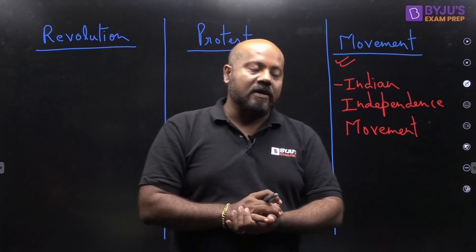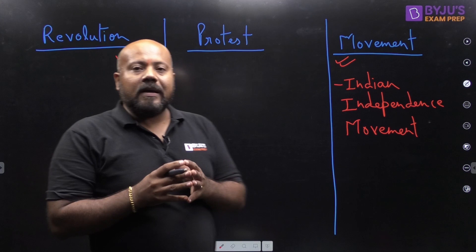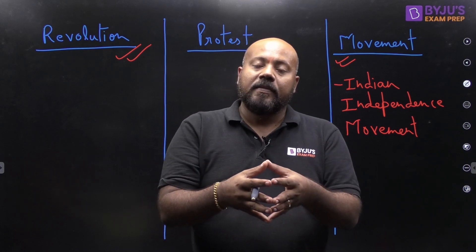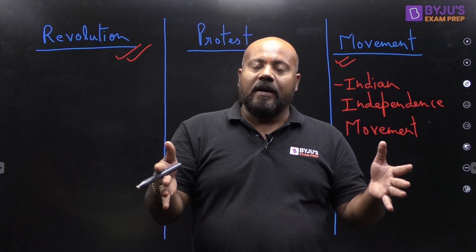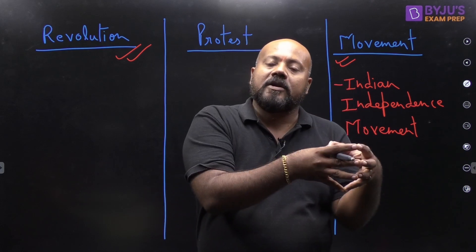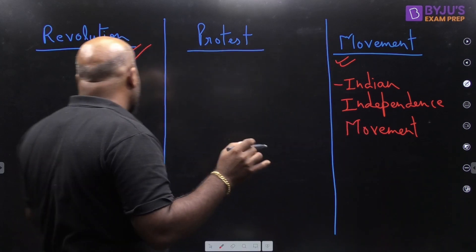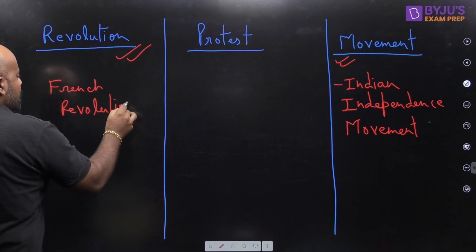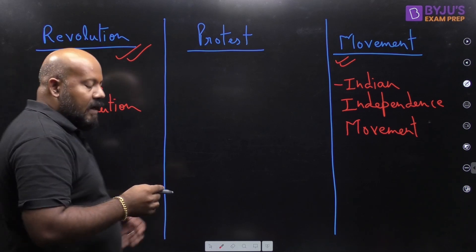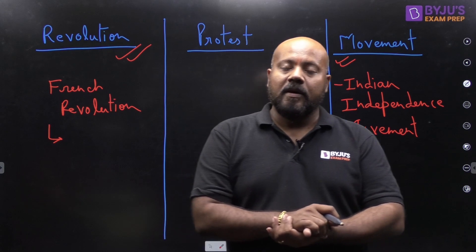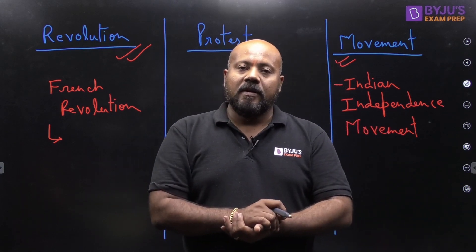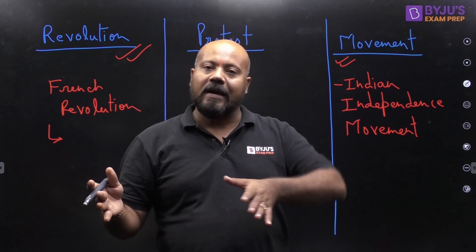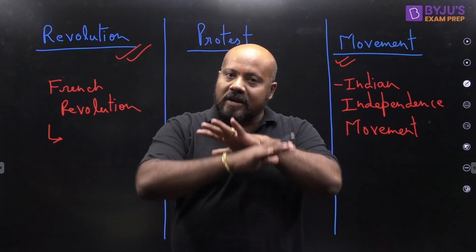Now let us understand what a revolution is. A revolution is an event — it is not a process, it is an event. It is such an event that before it and after it, every system and every part of the structure is going to be completely different. For example, the first revolution we define is the French Revolution, which gave the ideas of liberty, equality, and fraternity to challenge the aristocratic system. So revolution is not that every event qualifies; it is specifically an event where the whole system before and after is completely different.